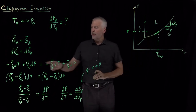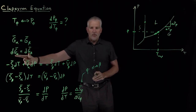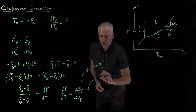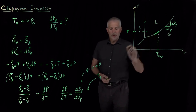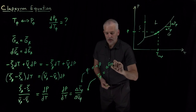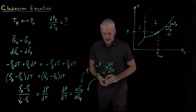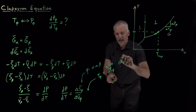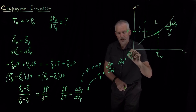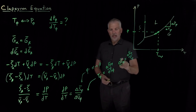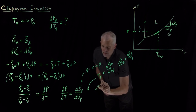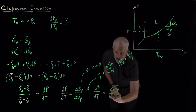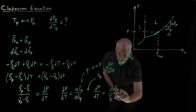We can do one step better. We already know that the temperature of any phase change equals delta H of that phase change divided by delta S of that phase change. Rearranging, delta S equals delta H divided by T. I'll use that to rewrite the numerator, so dP/dT equals delta H divided by T, all over delta V — the change in molar volume of that phase change. This is the Clausius-Clapeyron relation.